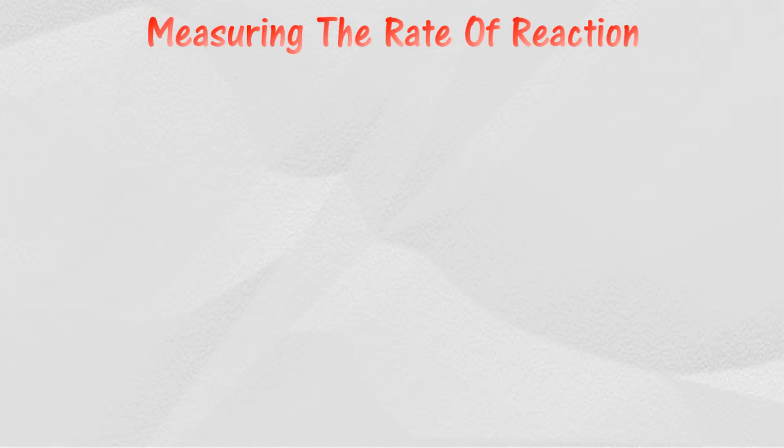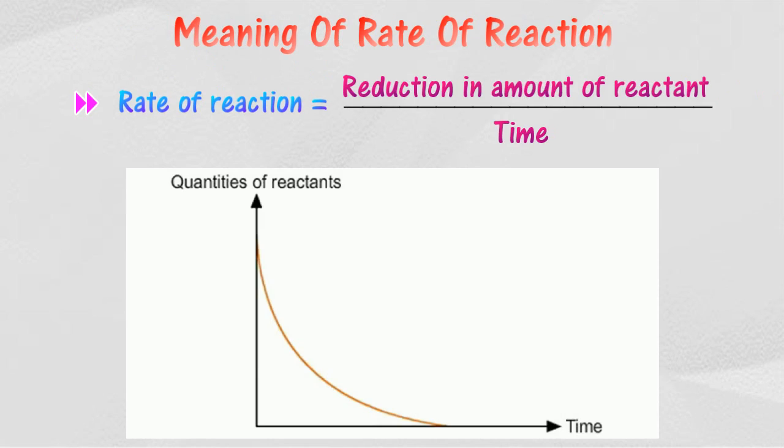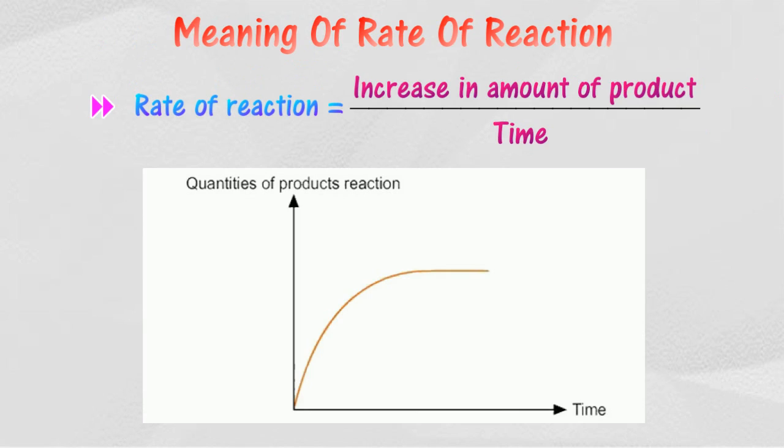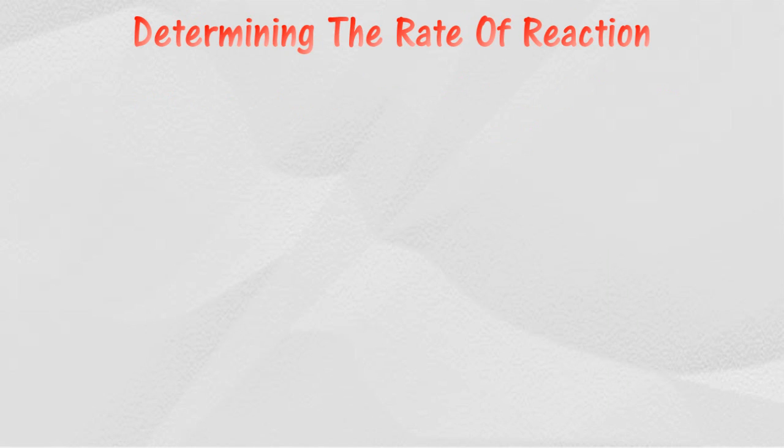Measuring the rate of reaction: There are two ways to measure rate of reaction - reduction in amount of reactant against time, or increase in amount of product against time. The rate of reaction can be measured as the average rate.